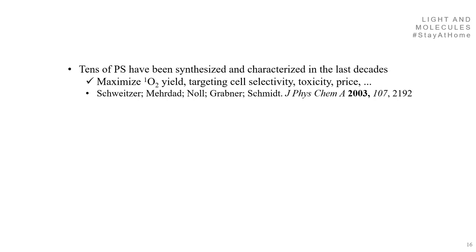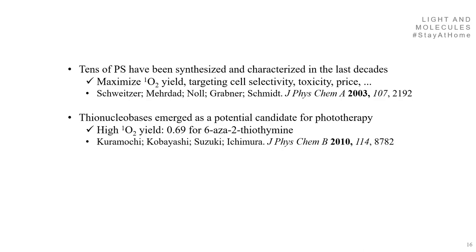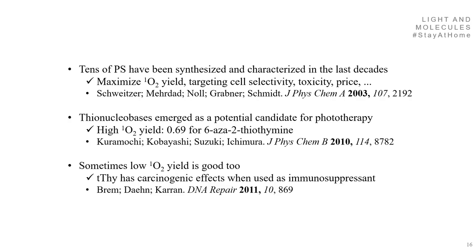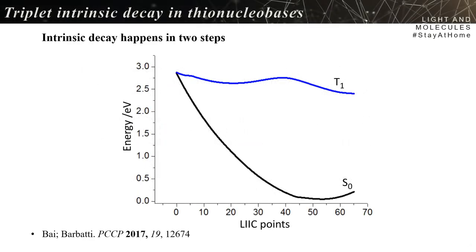There are tens of photosensitizers synthesized and characterized in the last decades, always aimed at maximizing singlet oxygen yield, target cell selectivity, toxicity, and price — all features important for pharmaceuticals and chemistry. Thionucleobases emerge as potential candidates for phototherapy. They have quite high singlet oxygen yields, like 0.69 for 6-aza-2-thiothymine. Interestingly, a low singlet oxygen yield can also be beneficial, especially when thiothymines are used as carcinogenic amino suppressants, where reducing singlet oxygen production is desirable. So we're looking at ways of controlling these features.